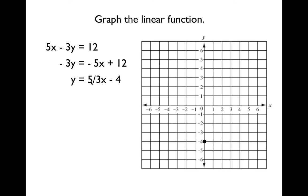Now let's take a look at our slope. How is our y changing? Our y is increasing by 5, and our x is increasing by 3. So let's increase y by 5 — go up 1, 2, 3, 4, 5 — and then increase x by 3: 1, 2, 3. Following the slope leads you to your second point, and all we need are two points to define a line. So we can use a straight edge and graph our line.